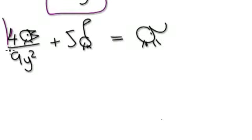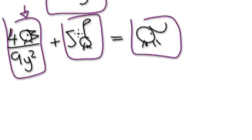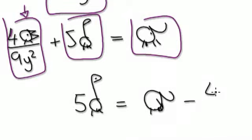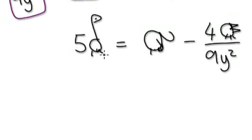Visualize it as one thing here, another thing here, another thing here. Kill off this bubble, because we are trying to get a giraffe on its own. So it would be five giraffes equals elephant take away four chickens over nine y squared. And now, ultimately, we've got to divide both sides by five. But you've got one thing and then taking away another thing here, so let's merge the two into one fraction — then it becomes really easy to divide.